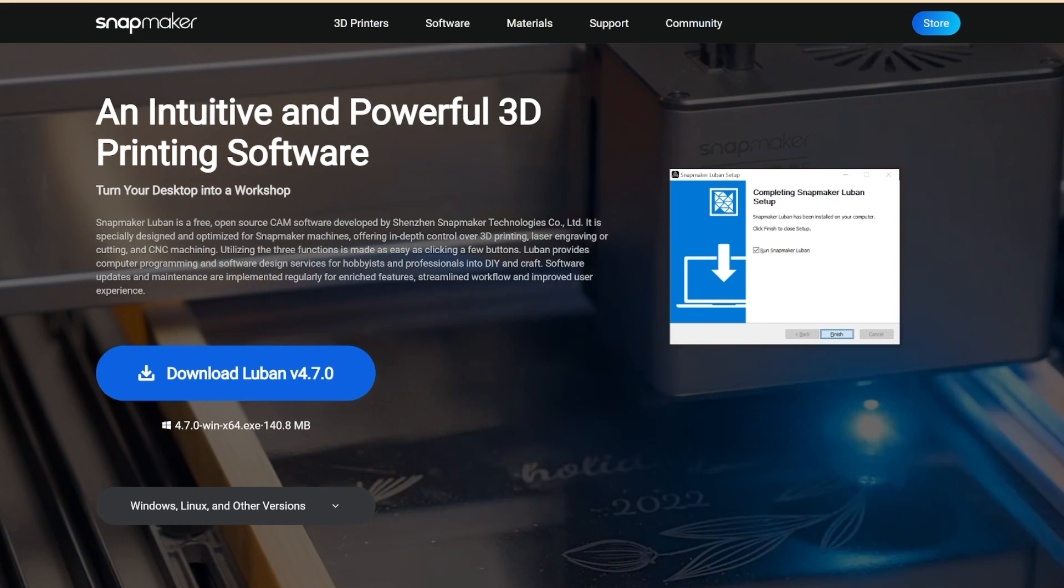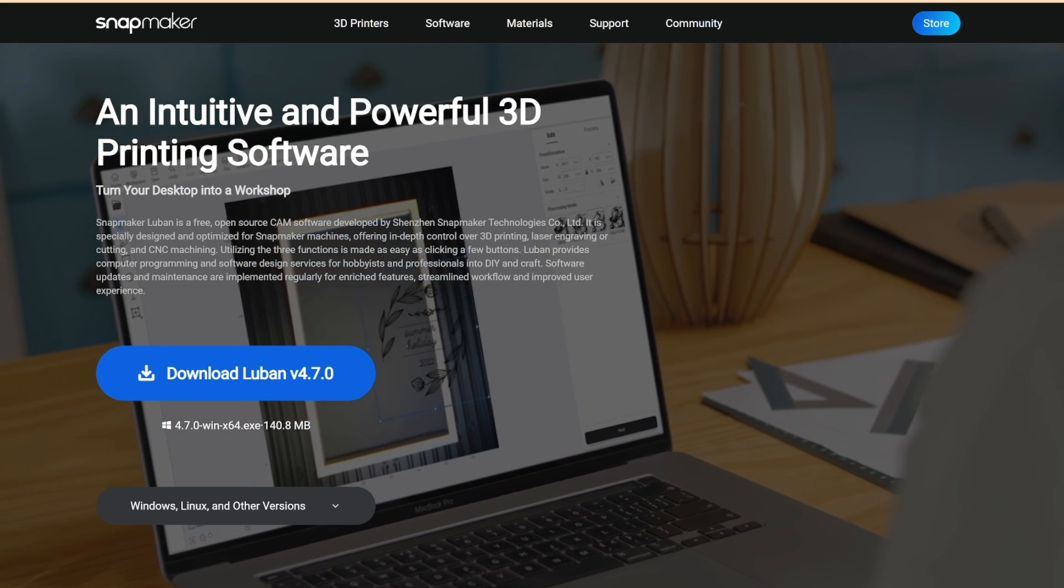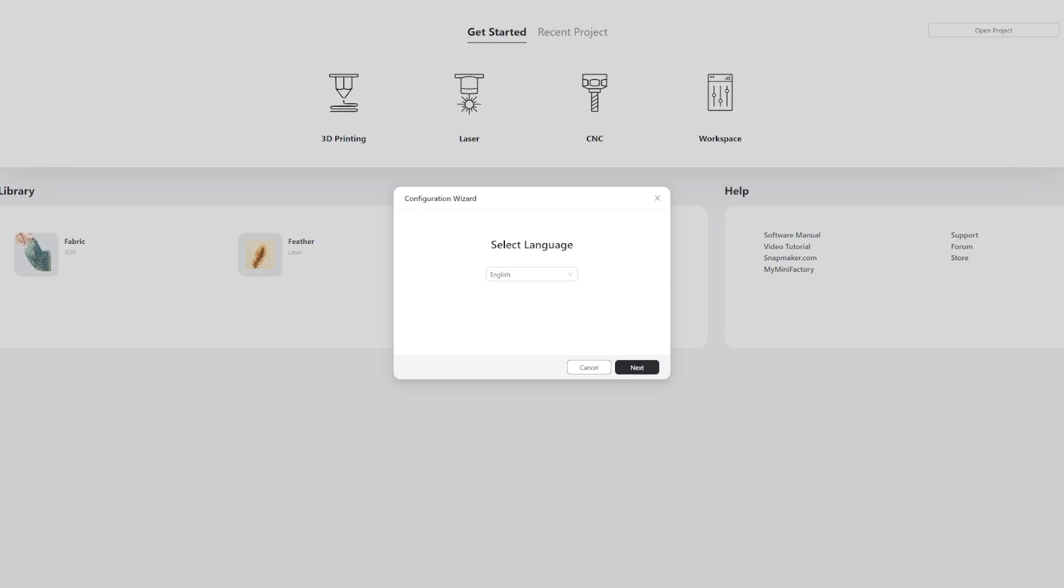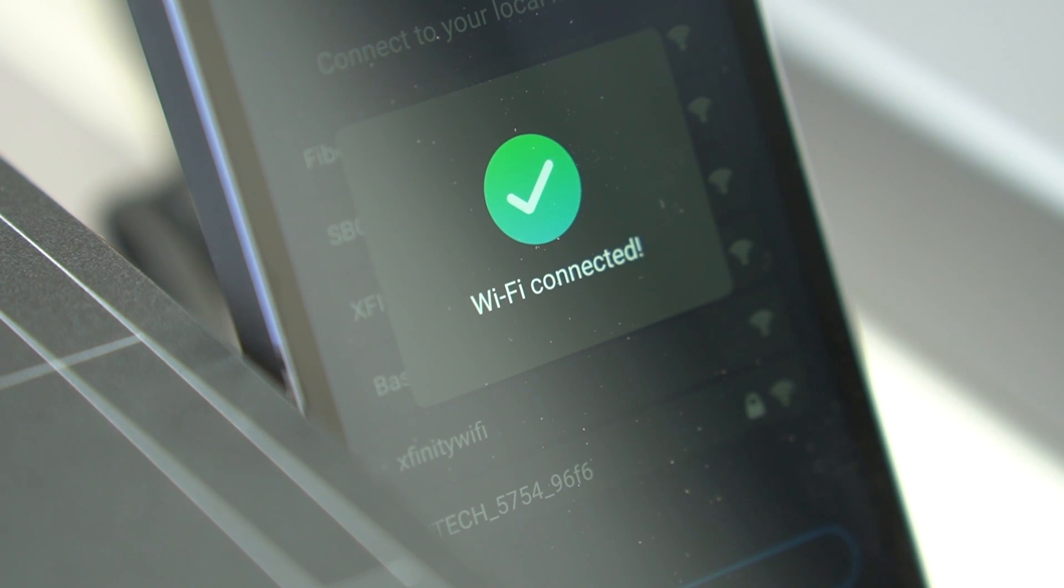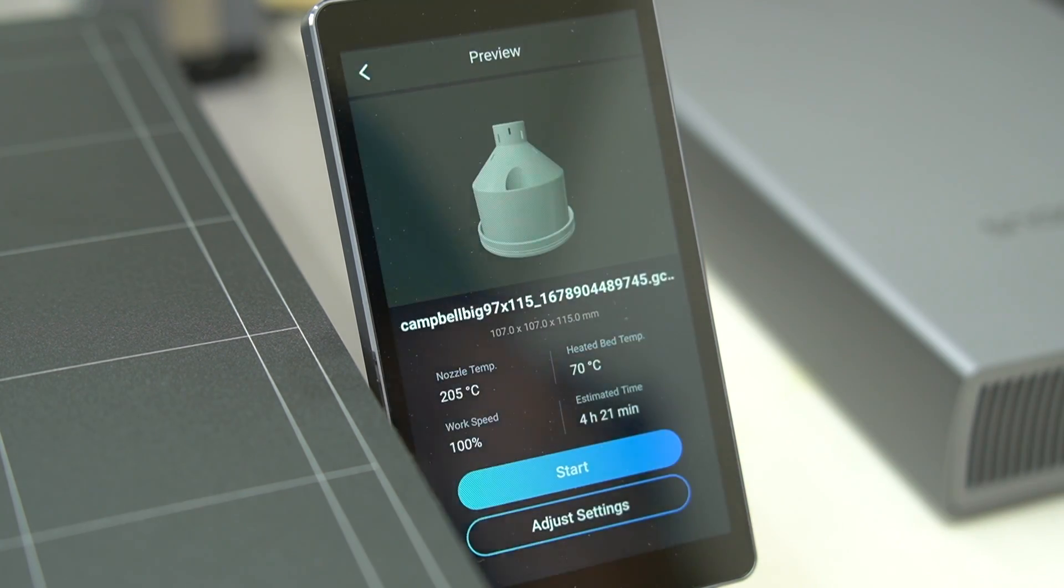The fourth thing is the software. The fact that it comes with its own software is mind-blowing for the price point. I don't know another machine at the price point that provides software that is this capable. Snapmaker Lubon comes with the machine and is surprisingly very functional and very easy to use, including sending your g-code files directly to your machine over Wi-Fi, which I did several times.